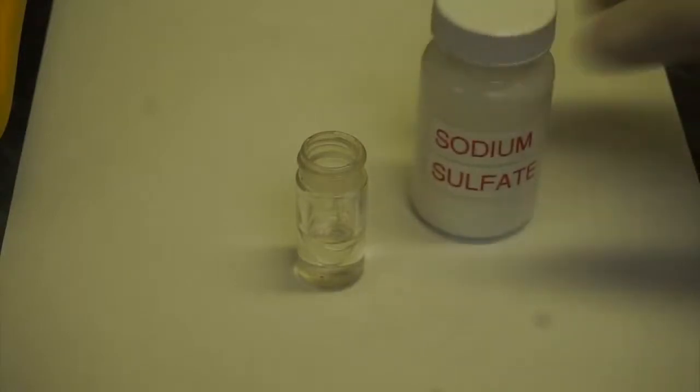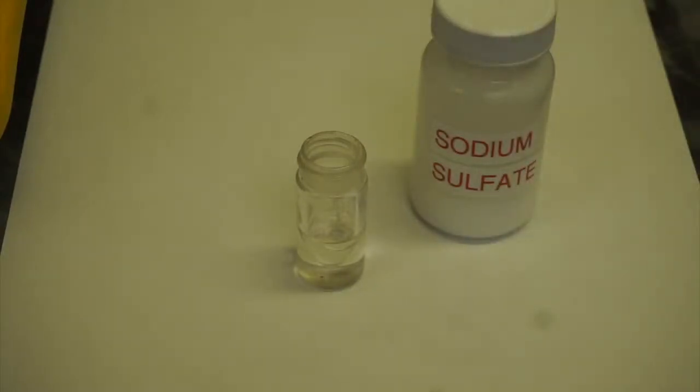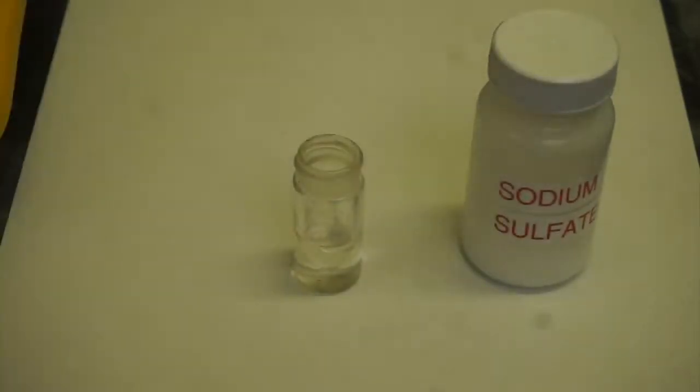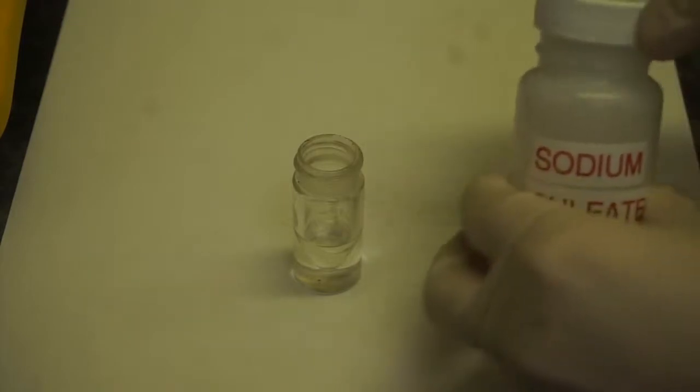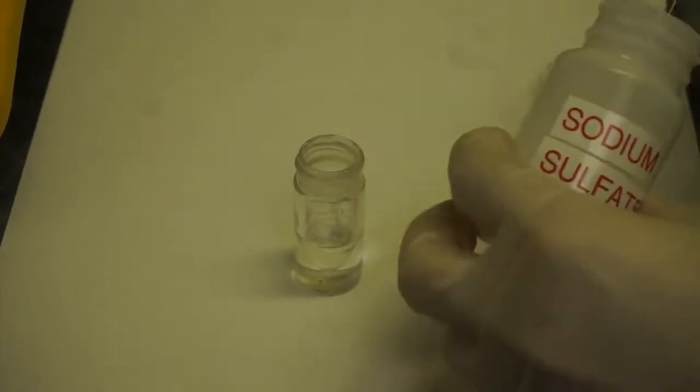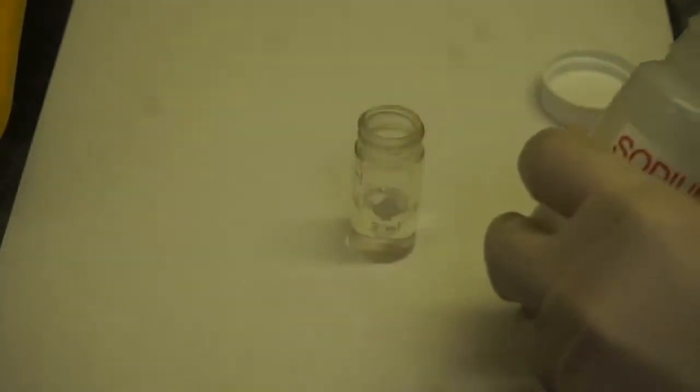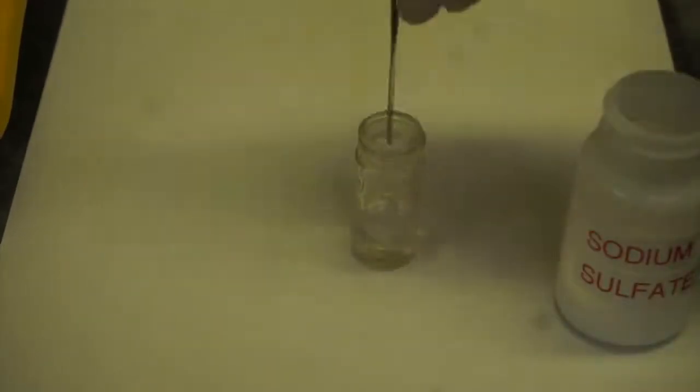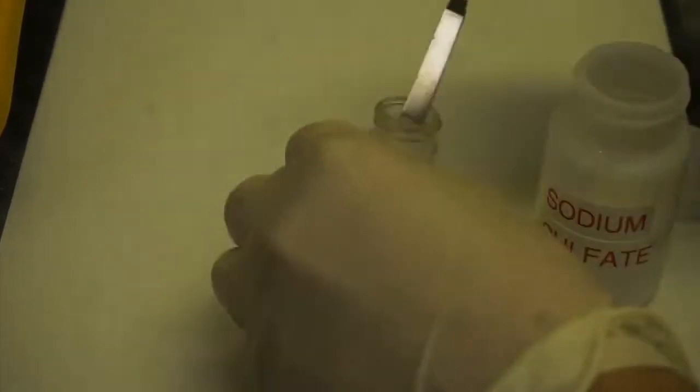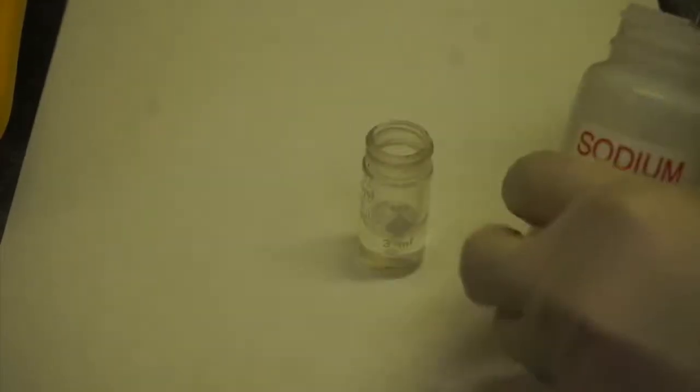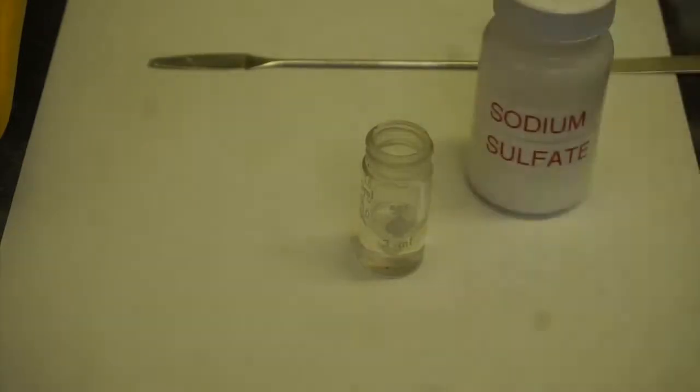First, water can be removed by addition of anhydrous sodium sulfate. So place enough anhydrous sodium sulfate into the conical vial. If you are not sure how much anhydrous sodium sulfate has to be added, please review the extraction experiment. After addition of the sodium sulfate, leave the solution for at least 5 minutes.